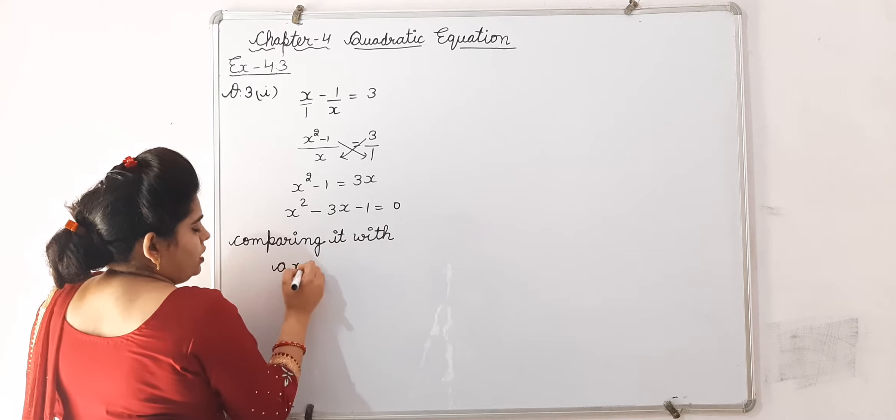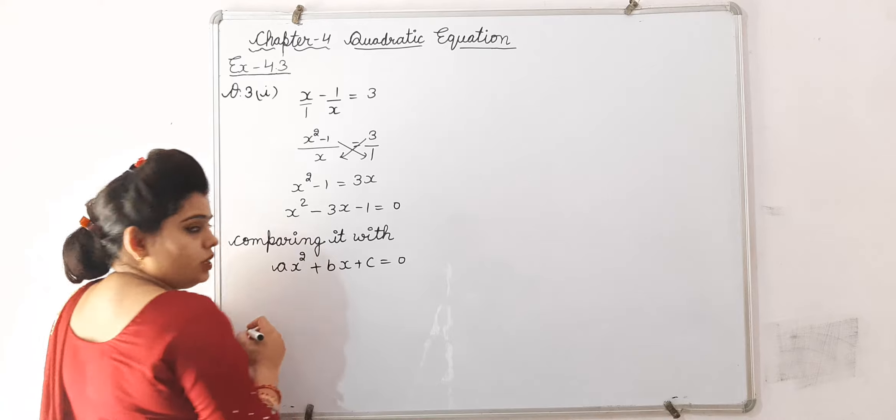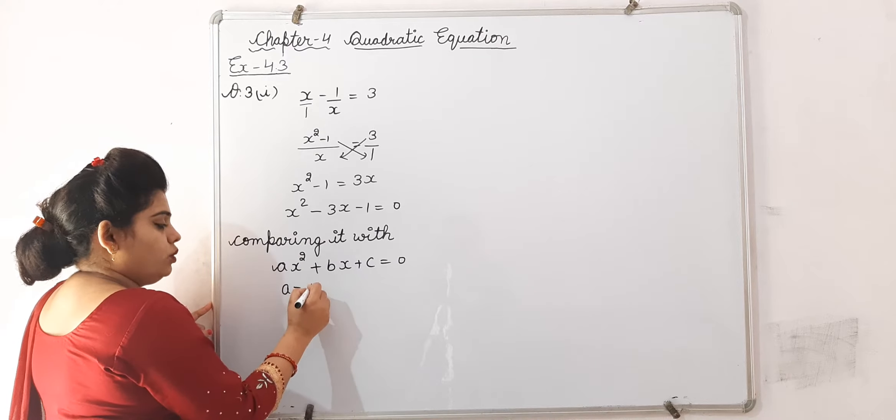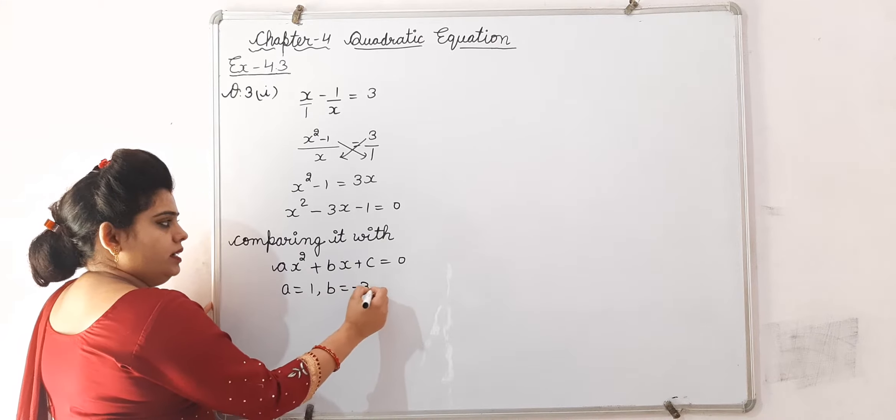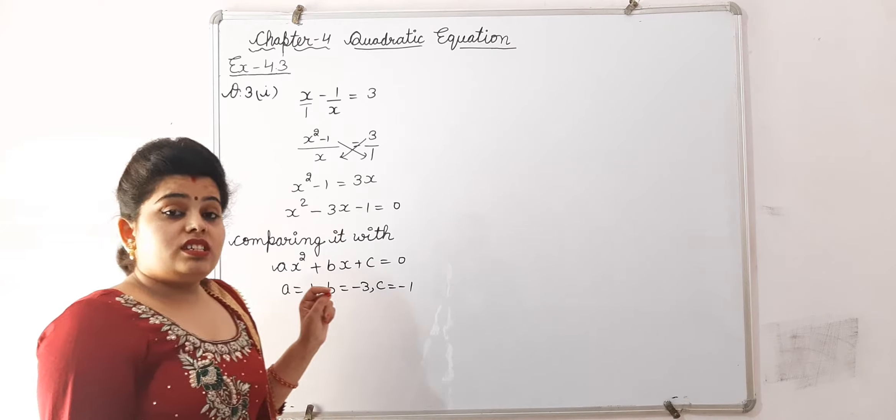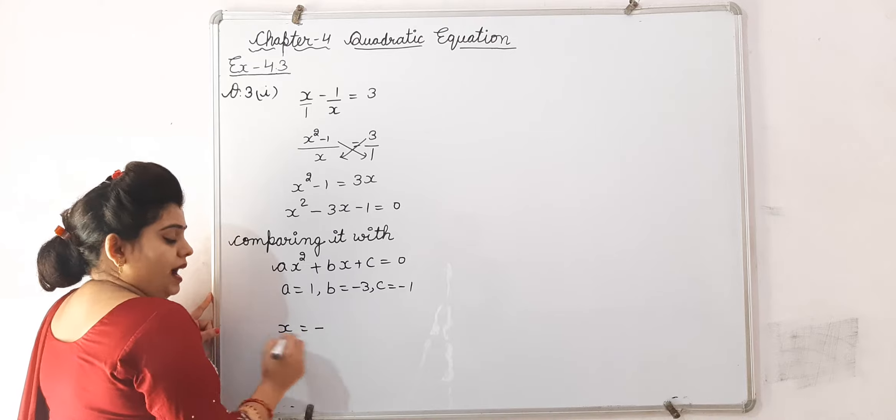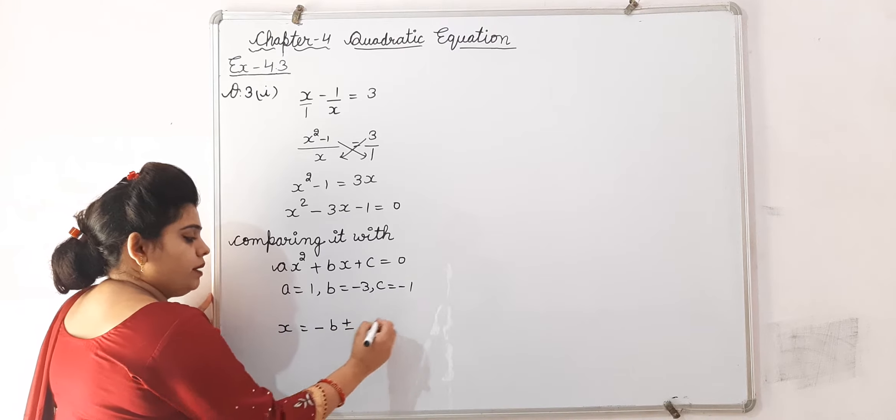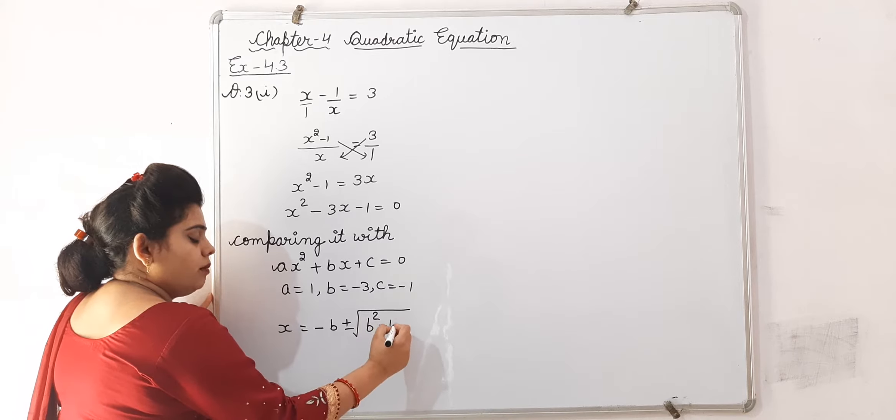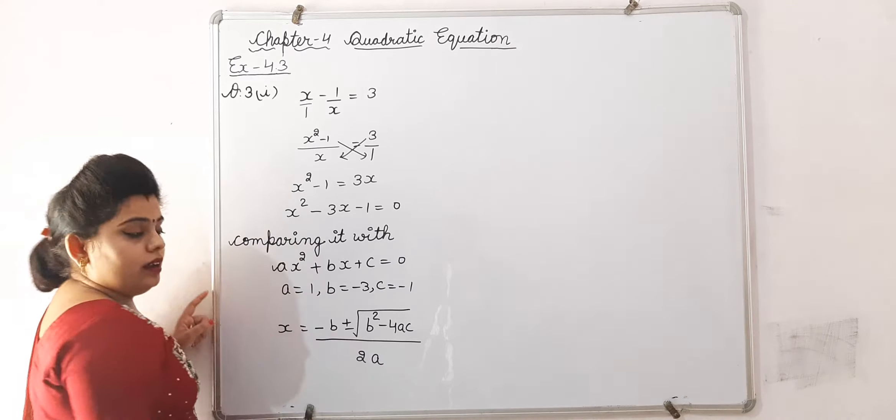ax square plus bx plus c is equal to 0. From here we get the values of a, b and c: a is equal to 1, b is equal to minus 3, c is equal to minus 1. Here I am using quadratic formula. So, for x formula is minus b plus minus square root of b square minus 4ac divided by 2a.